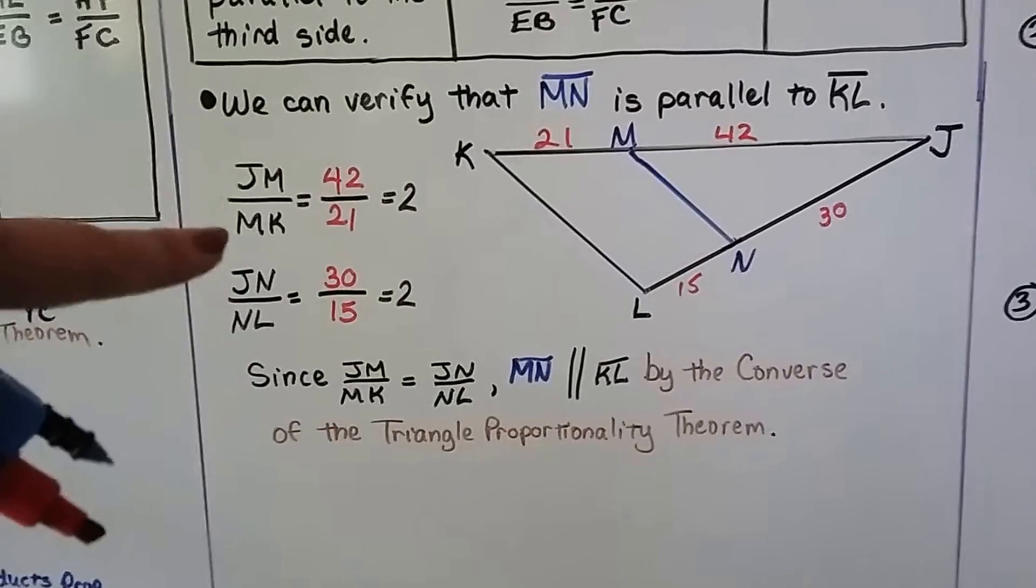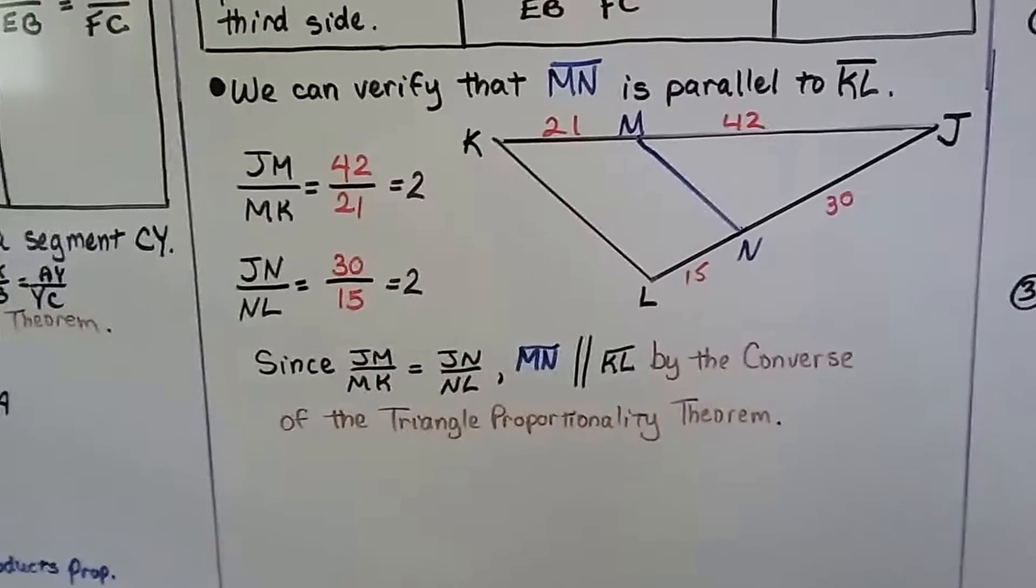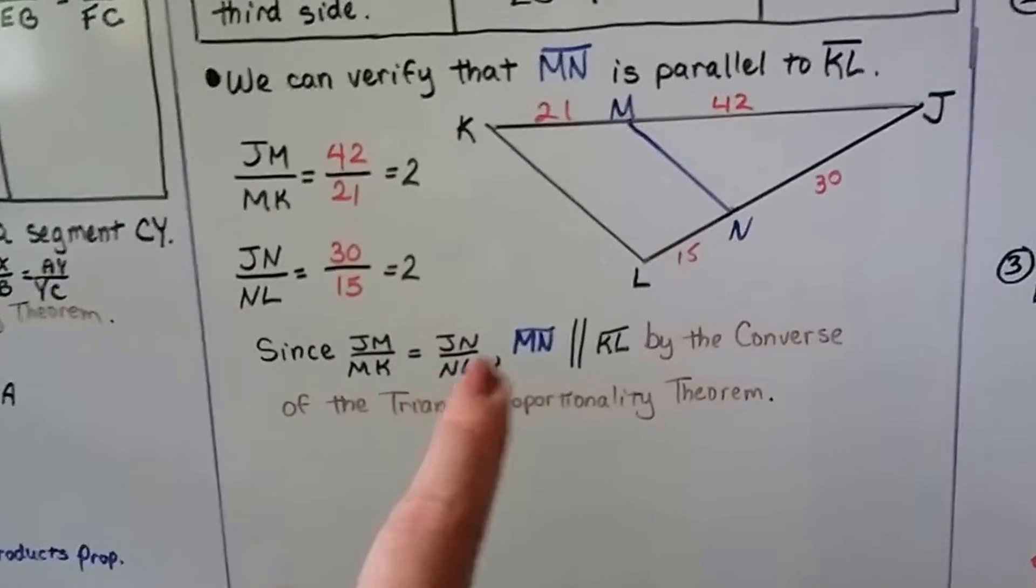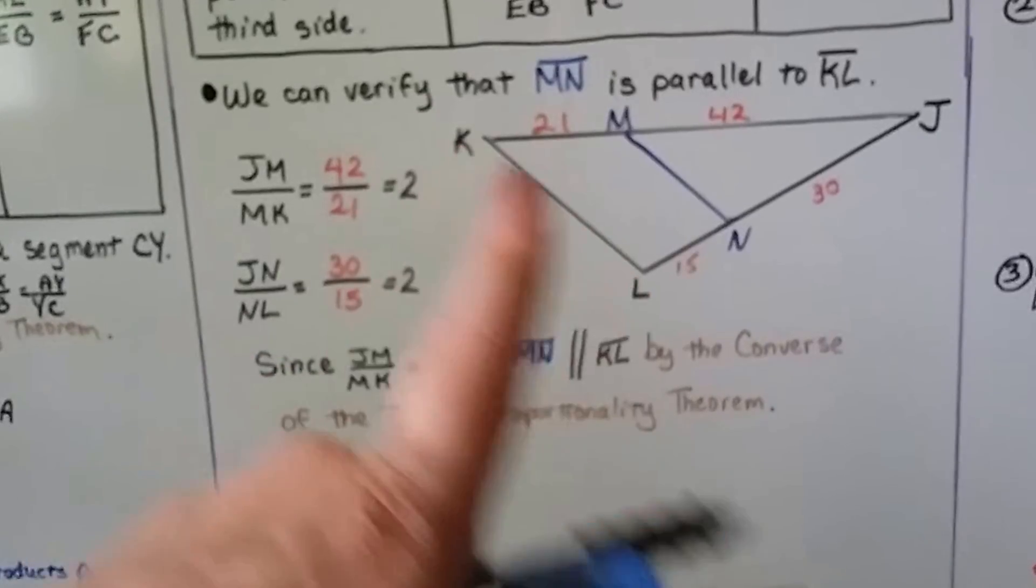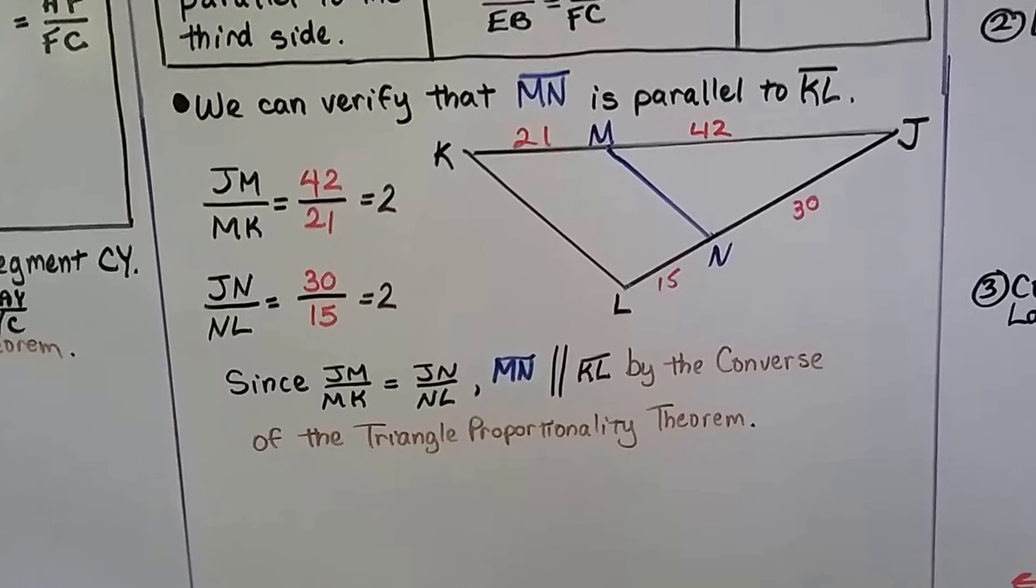When we do the math, we find out that this one is a two and that one is a two. They're the same. They're proportional. And since the JM over MK is equal to the JN over NL, we can say MN is parallel to KL by the converse of the triangle proportionality theorem.